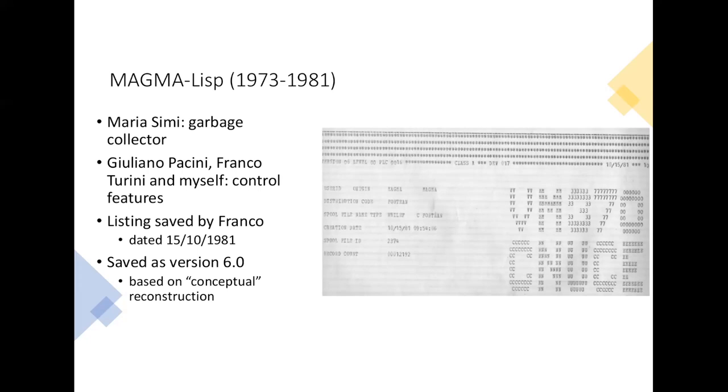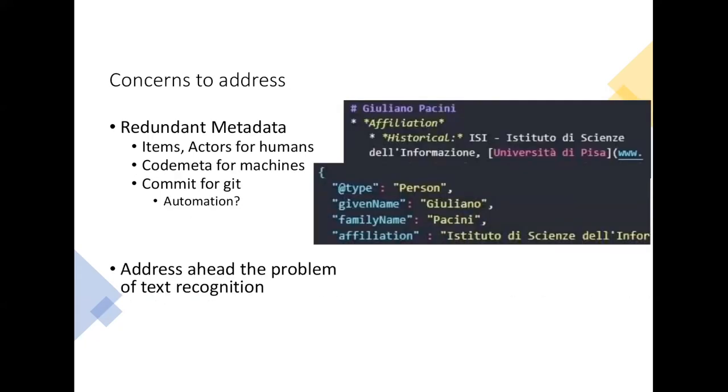It is dated 15/10/81, and in fact this is the last known version of the system and unfortunately is also the only one documented. But I saved it, again somewhat arbitrarily, as version 6.0 because I recovered a conceptual history of the versions with various steps. For instance, we had a version without garbage collection and then we had a version with the garbage collection, et cetera. And so that's my again personal reconstruction of the story of this thing.